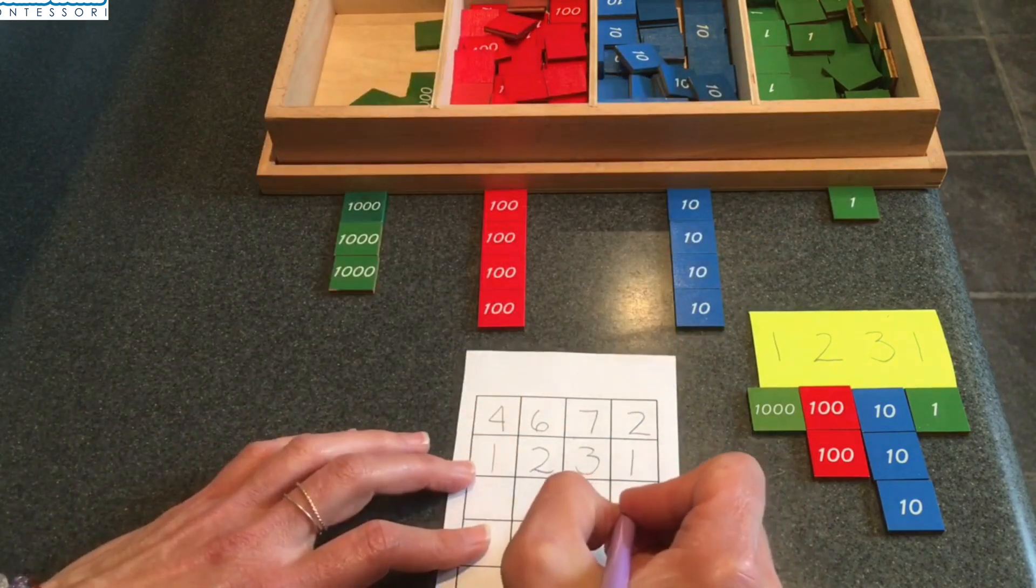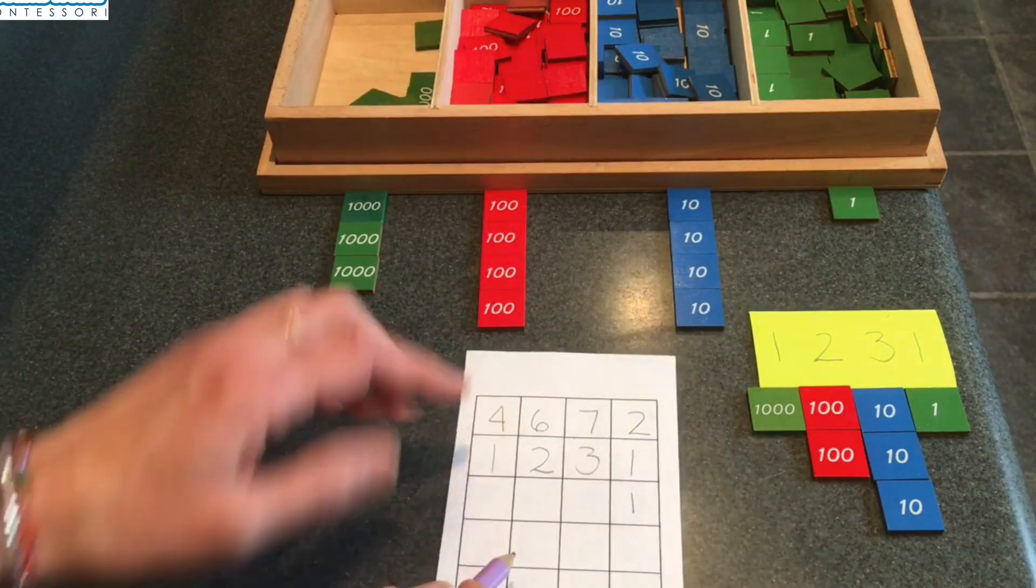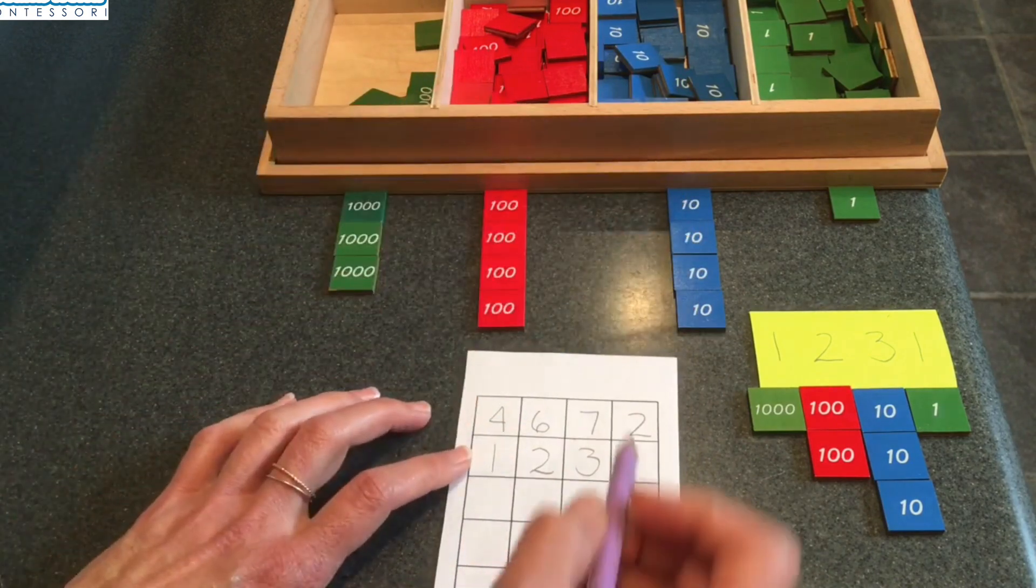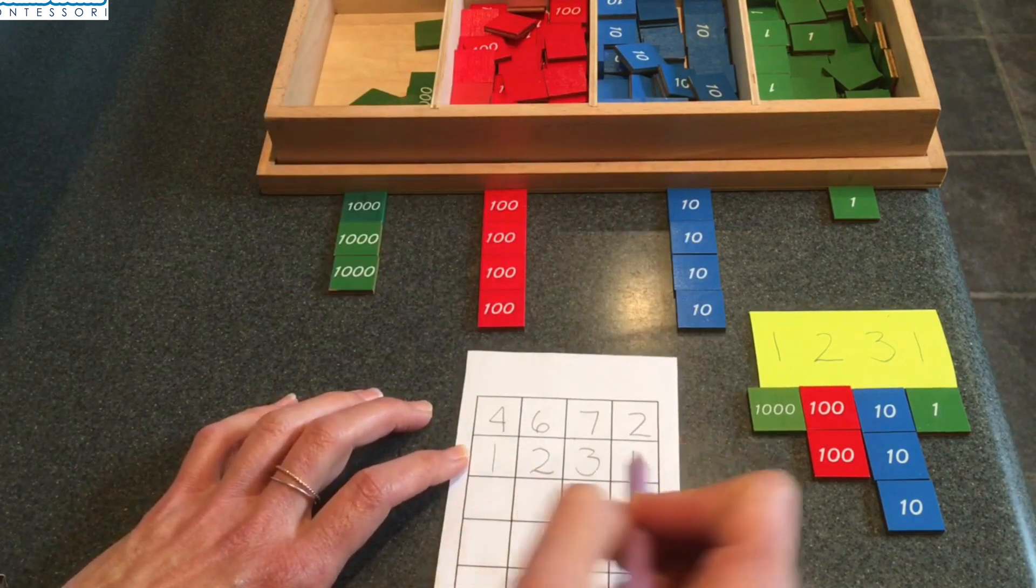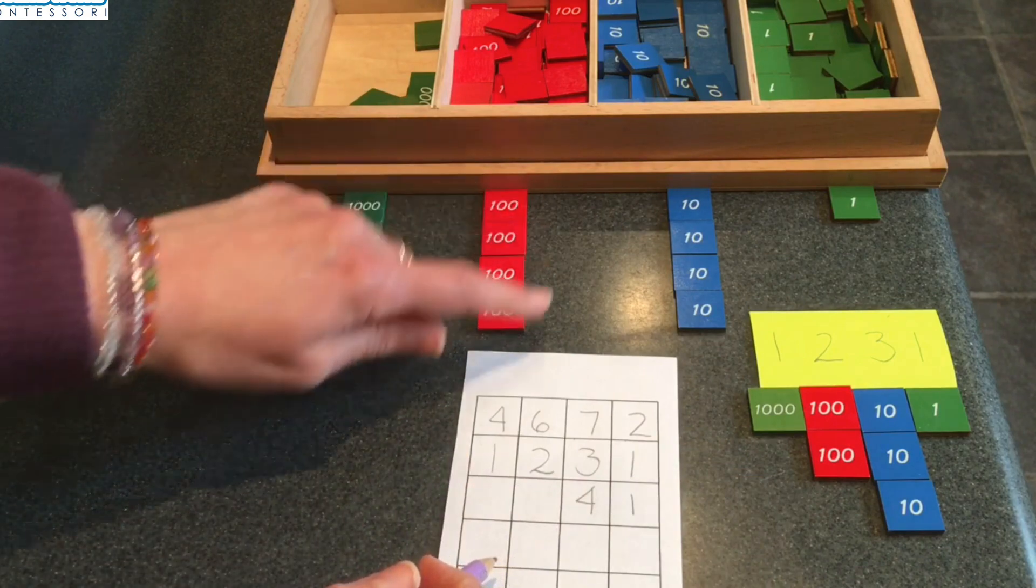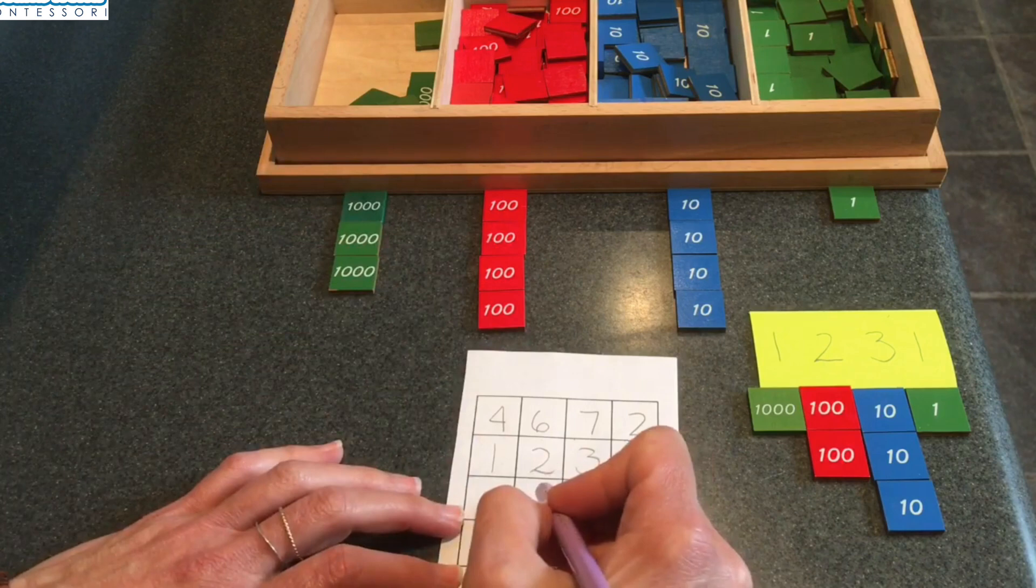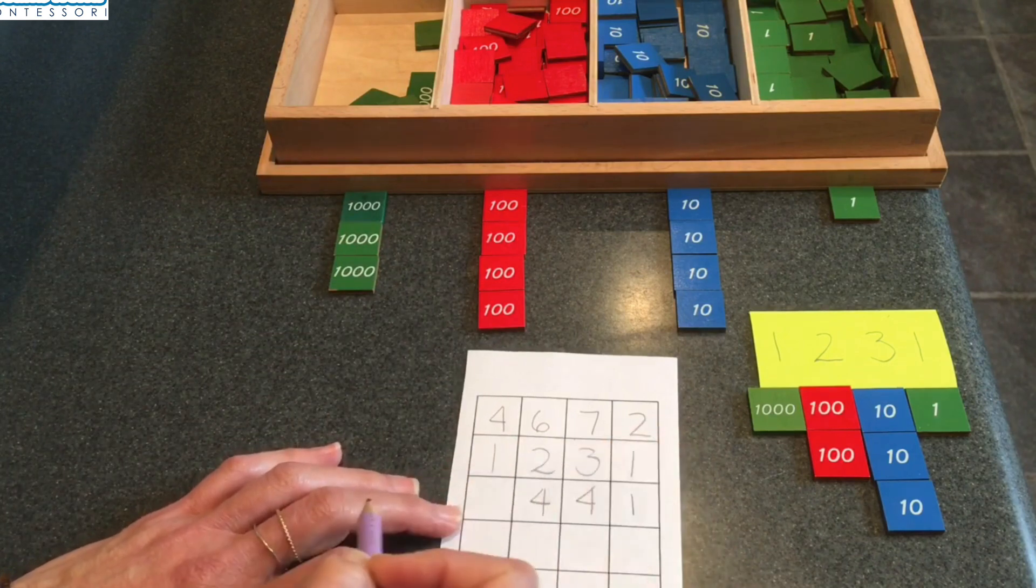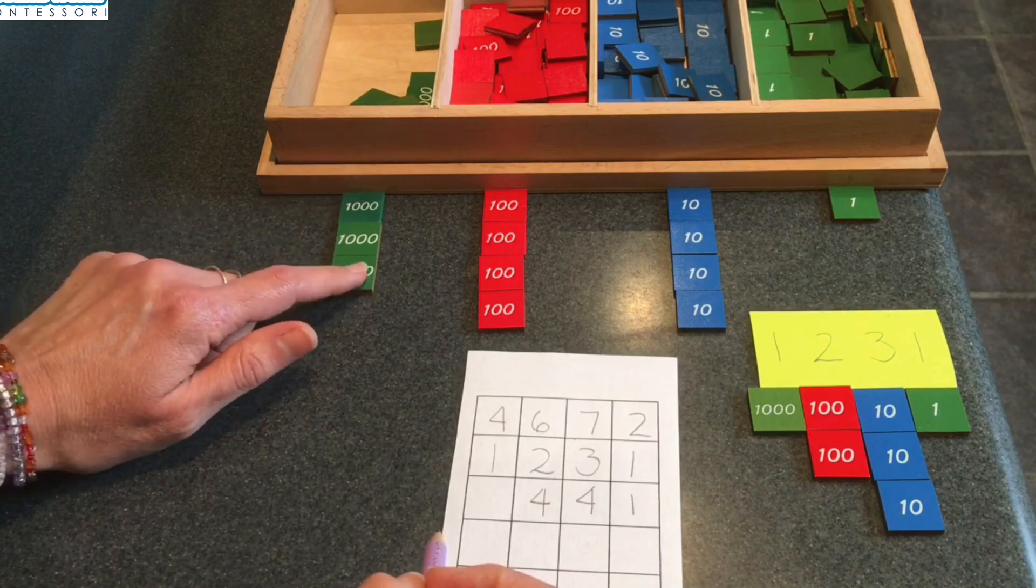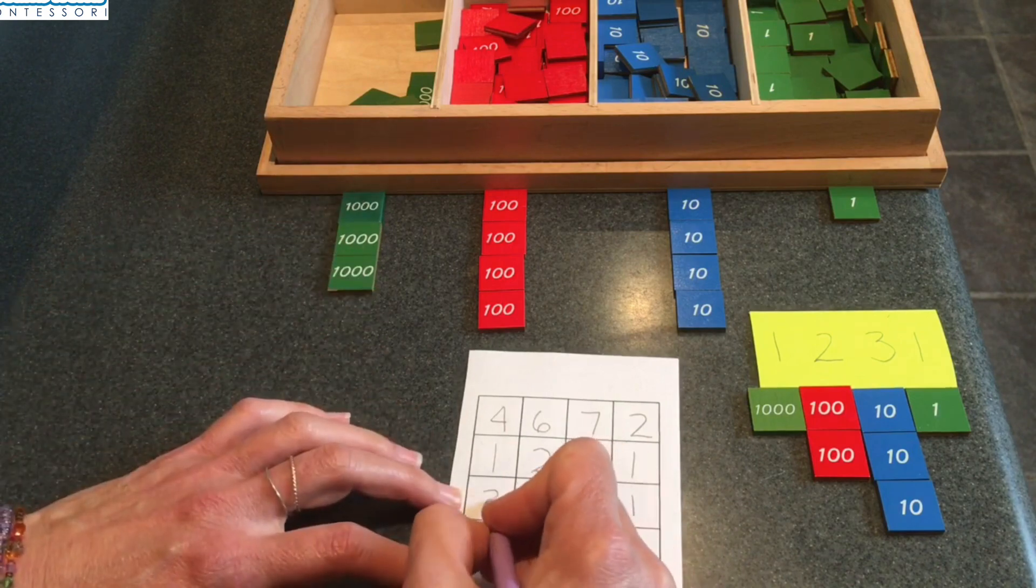One unit. Let's see. One, two, three, four tens. One, two, three, four hundreds. And let's see how many thousands I have left. One, two, three. I have three thousands.